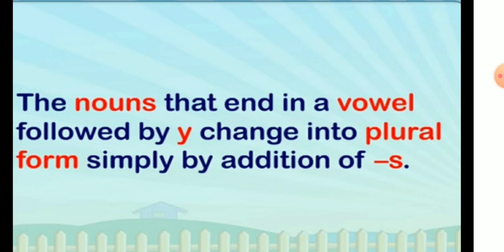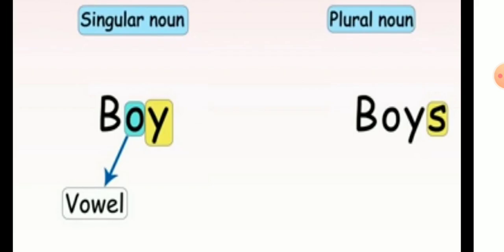If a noun ends in 'y' and there is a vowel before the 'y', we only add 's'. For example, when 'o' comes before 'y', and since 'o' is a vowel, we only add 's' after 'y' when changing to plural form.